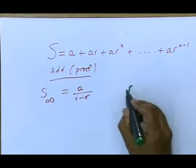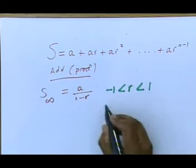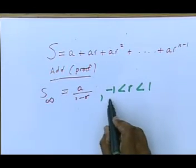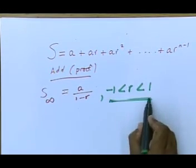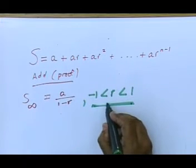And notice what happens, which many of us ignore. It says the following. It says this formula only applies if that is the case. If r is greater than negative 1, less than 1.